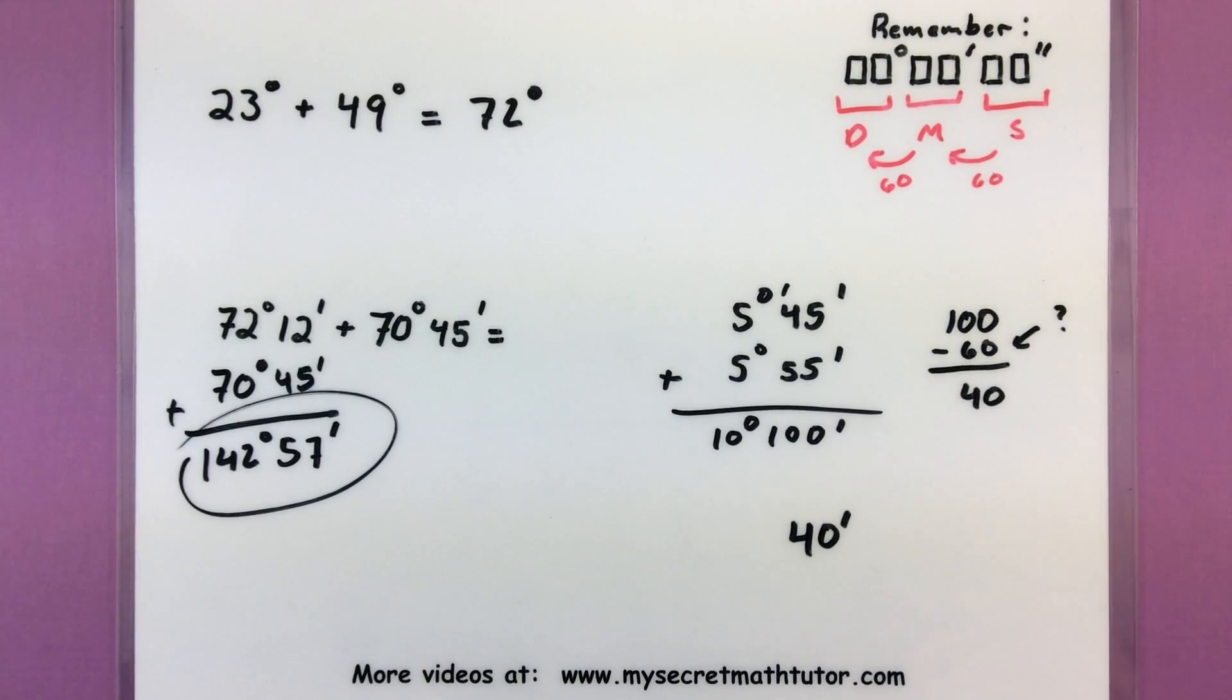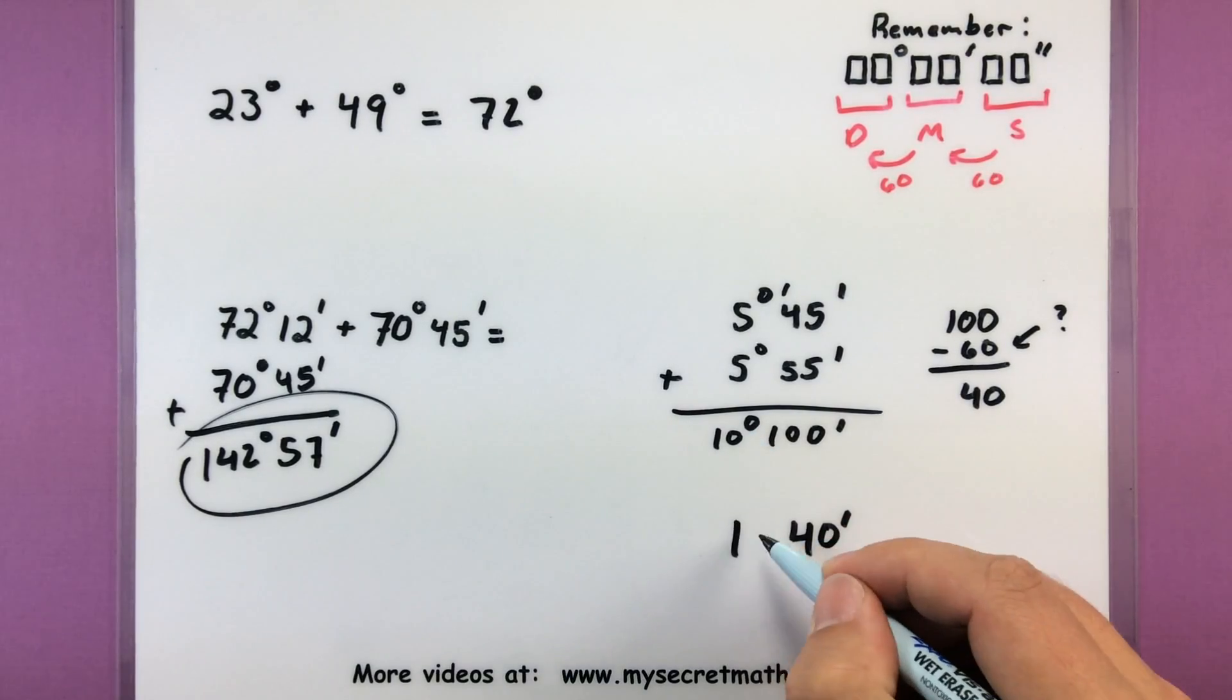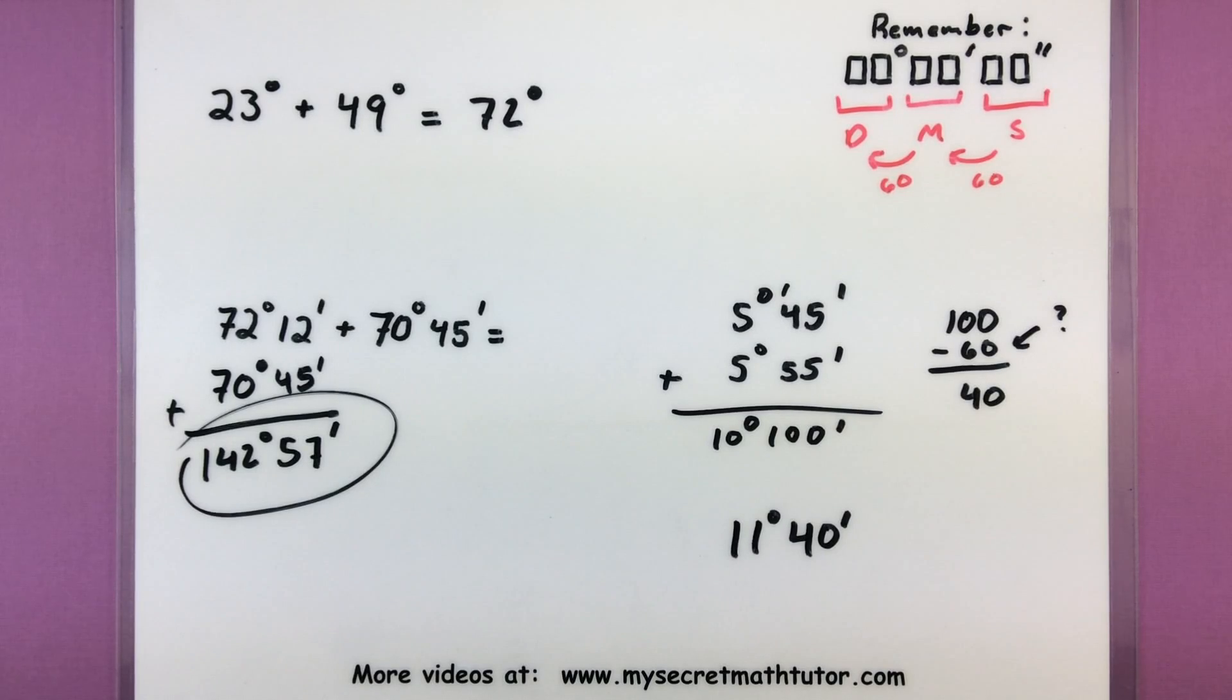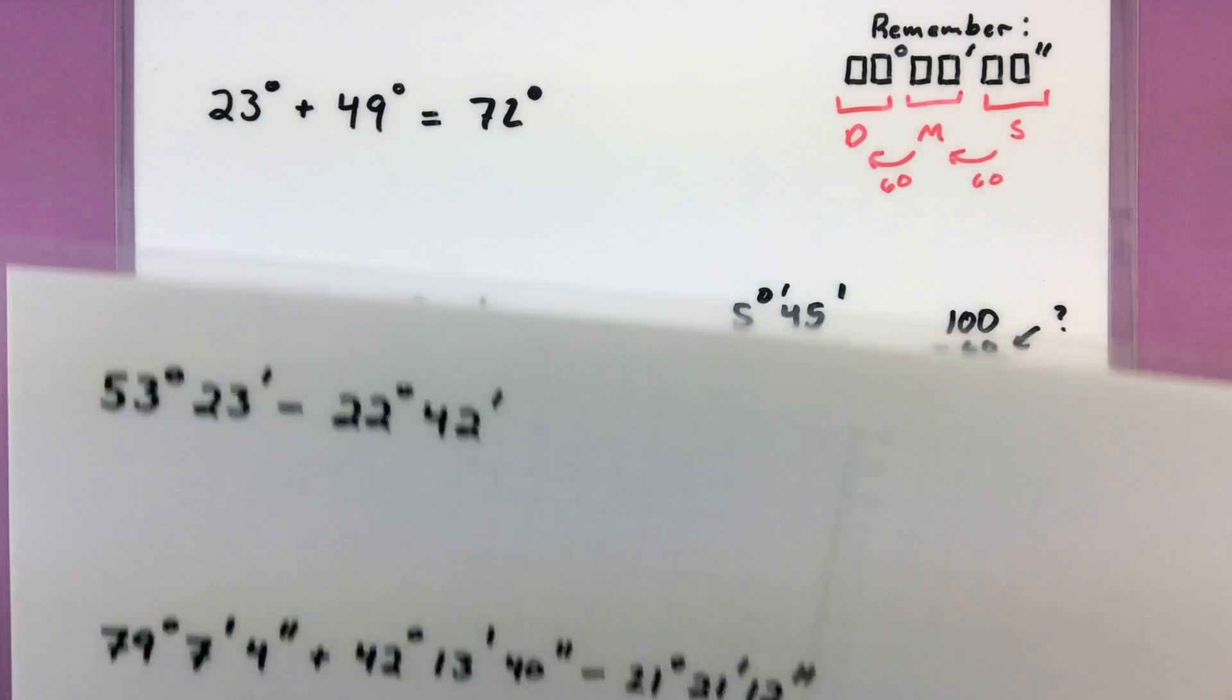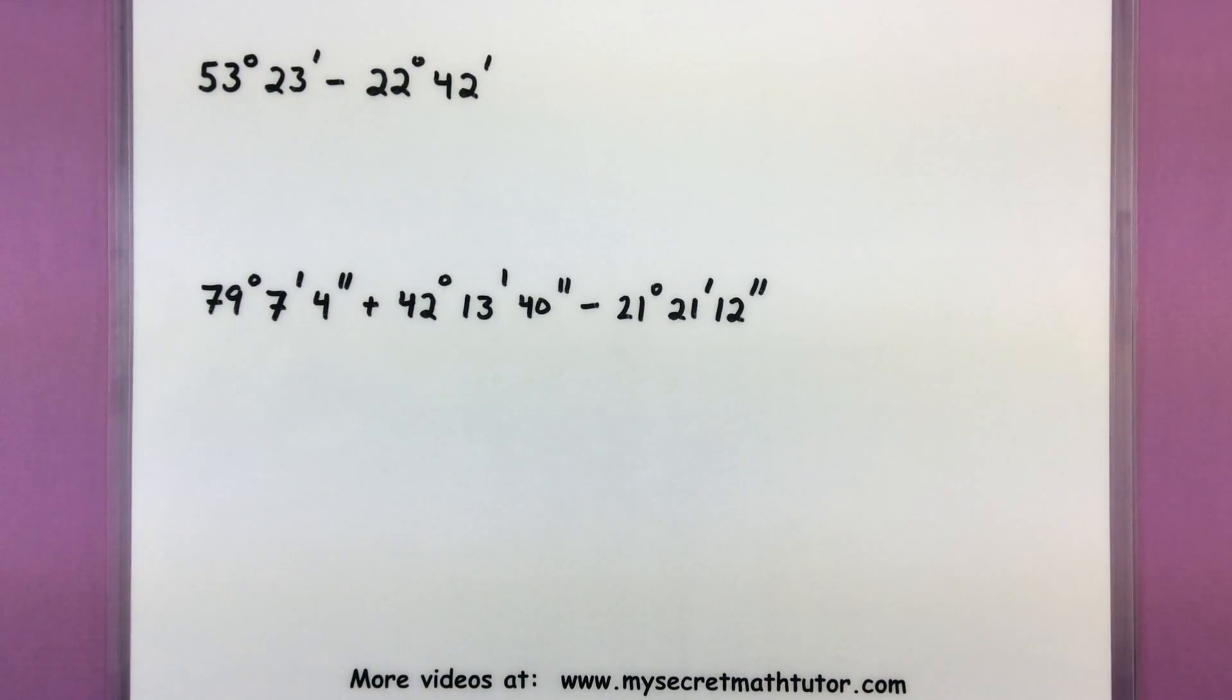Now where does this guy go? What did I do with that 60? It becomes an extra degree. So let's go ahead and add one in there. We will say this is 11 degrees, 40 minutes, and that would be the actual answer to this. Let's get into some other examples. Try out some subtraction, see how that goes.